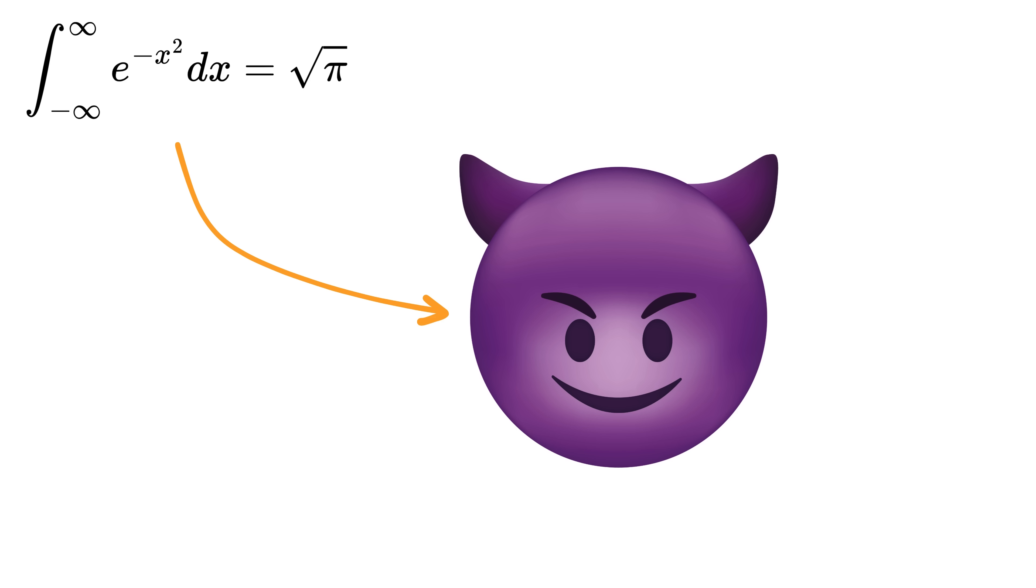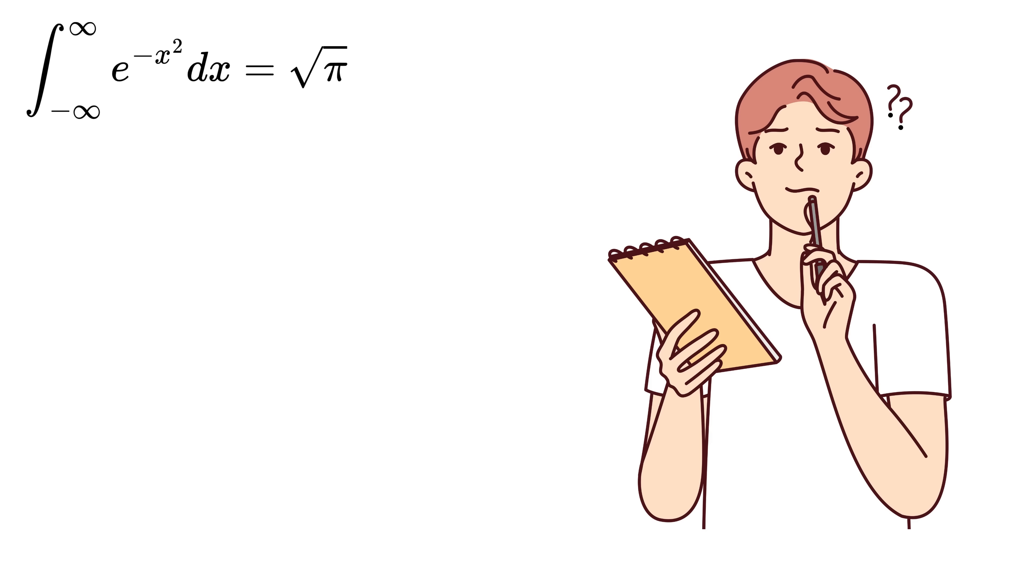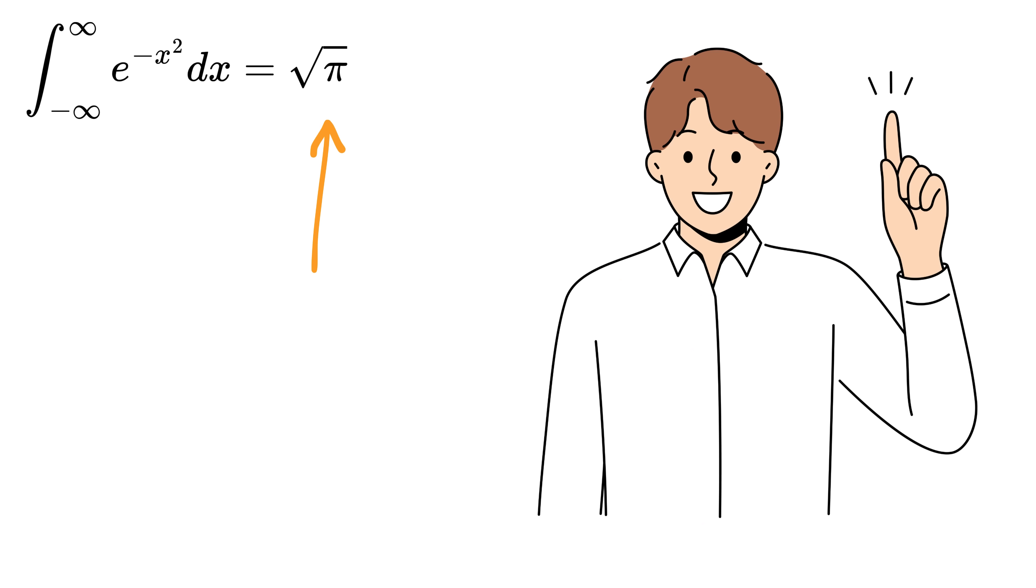But it turns out that nothing really works. This function just refuses to play nice. So what to do now? We're forced to bring in a completely different approach, and that's when pi will mysteriously show up.